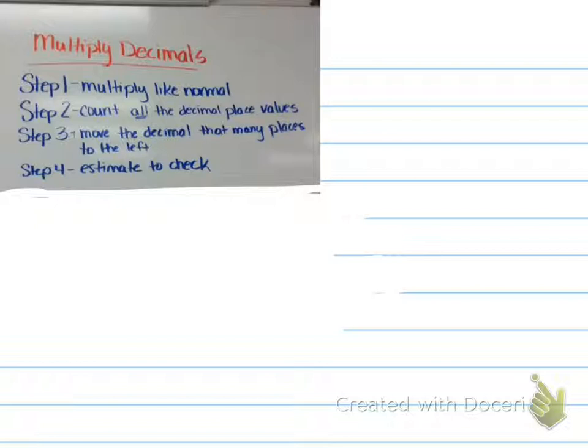Step one, and you can pause the video if you need to copy it down. So multiplying decimals, I have listed four steps. Step one is to multiply like normal. Step two is to count all the decimal place values. Step three is to move the decimal that many places to the left. And step four is to check to estimate.